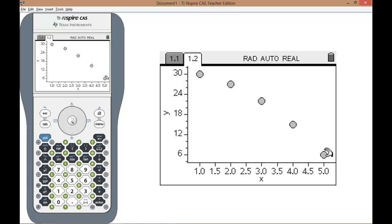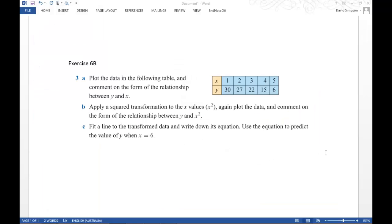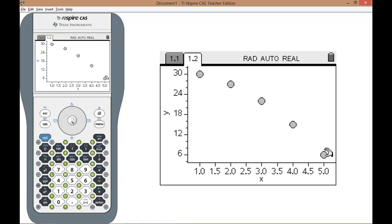In order to make it linear we need to apply the x squared transformation. And that's what part B says. Apply a squared transformation to the x values, again plot the data and comment on the form of the relationship. So this relationship here is negative and it's getting more negative quickly as the x values increase.